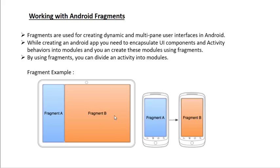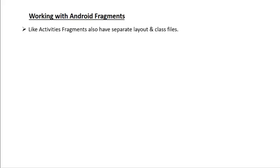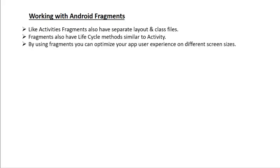So instead of creating multiple activities, you can divide a single activity into two modules called Fragment A and Fragment B. On a large screen we display two modules at the same time, but on a normal screen we display only one module. This means you can easily create dynamic user interfaces using fragments. Like activities, fragments also have separate layout and class files, and fragments also have lifecycle methods similar to an activity. You can also add or remove a fragment while the activity is running.